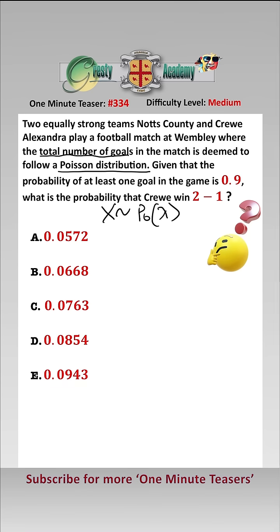We're also told that the probability of at least one goal in the game is 0.9, therefore the probability of zero goals is equal to 0.1.